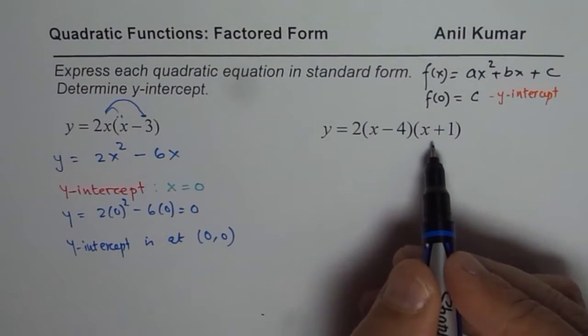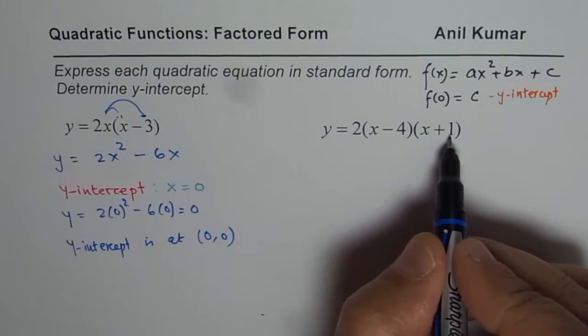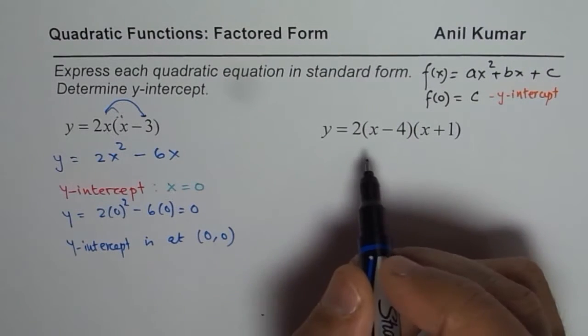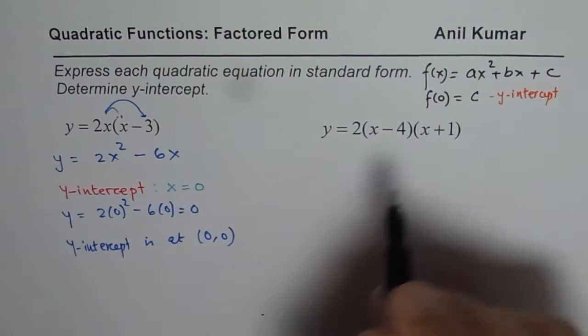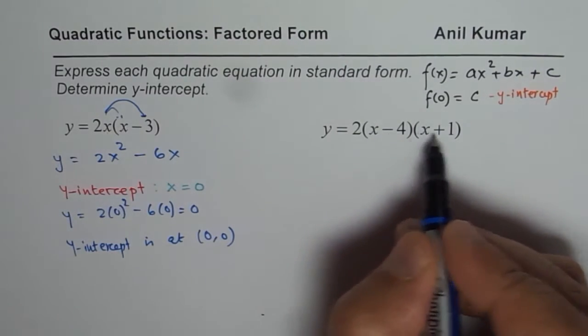Let us do this equation now. So here we have two binomials multiplied by 2. Now the option is you could first multiply one of them by 2 and then do the needful or you could expand this. Either way,